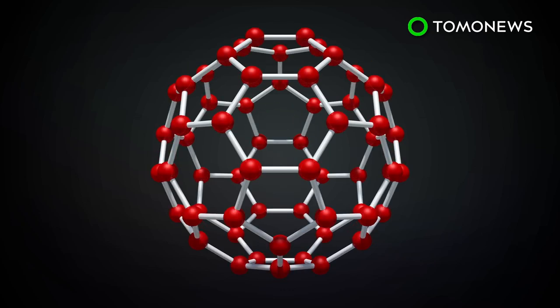According to NASA, Buckminster Fullerene, or buckyballs, are molecules made of 60 carbon atoms arranged in a hollow sphere in the rough shape of a soccer ball.